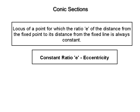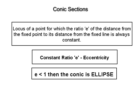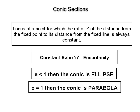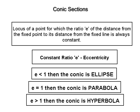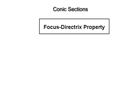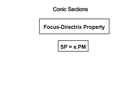As e is a ratio, it is a positive number. If e is less than 1, then the conic is an ellipse. If e is equal to 1, then the conic is a parabola, and if e is greater than 1, then the conic is a hyperbola. Suppose P(x,y) is any point on the conic and PM is perpendicular from point P on the directrix, then SP/PM = e, that is SP = e·PM. This is called the focus-directrix property of a conic.